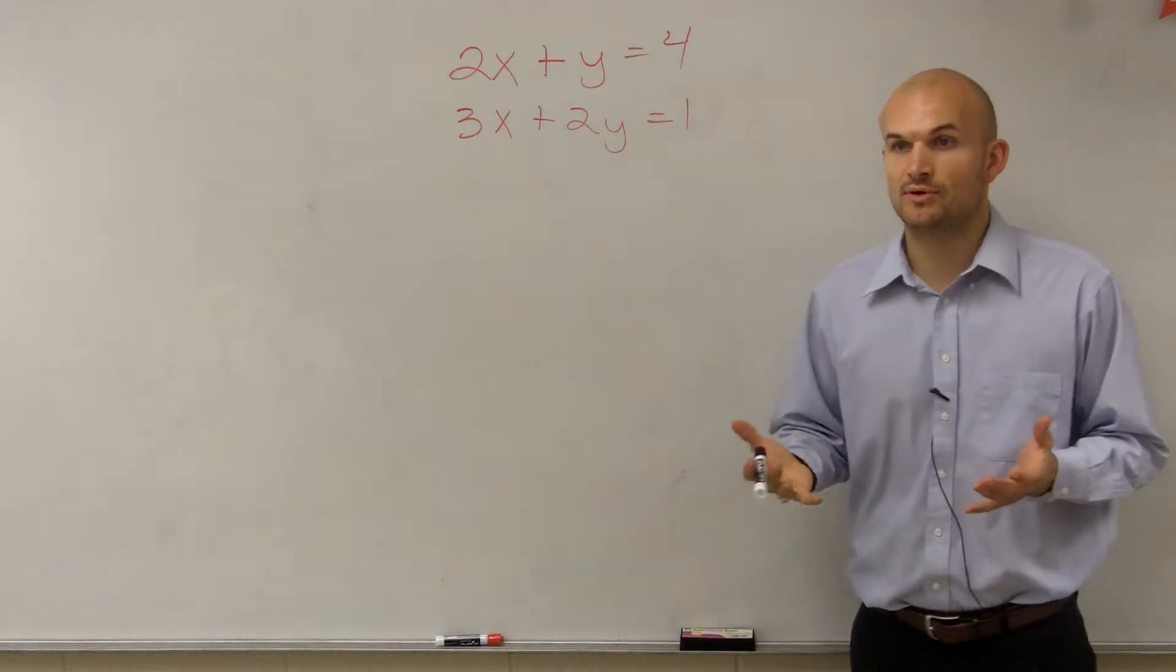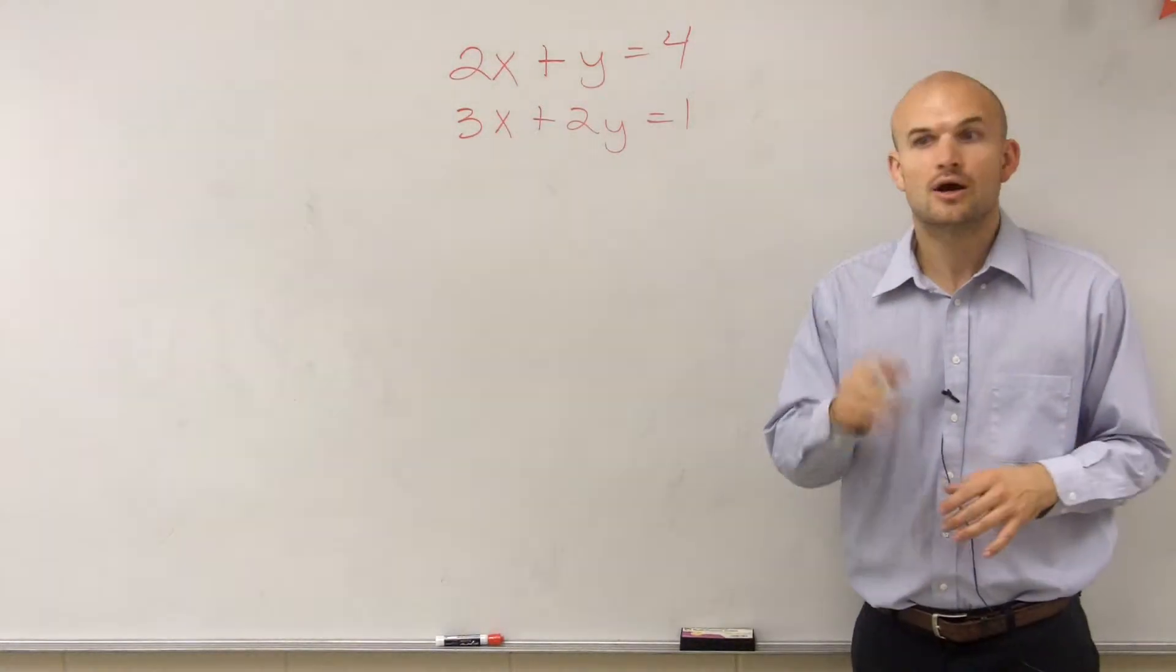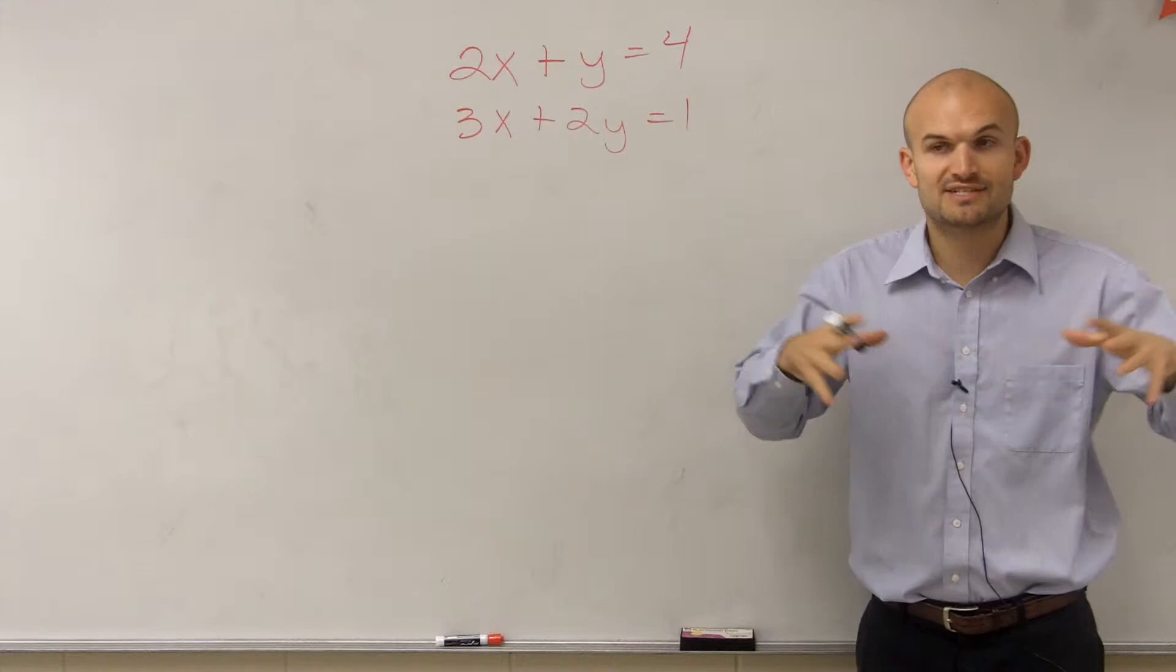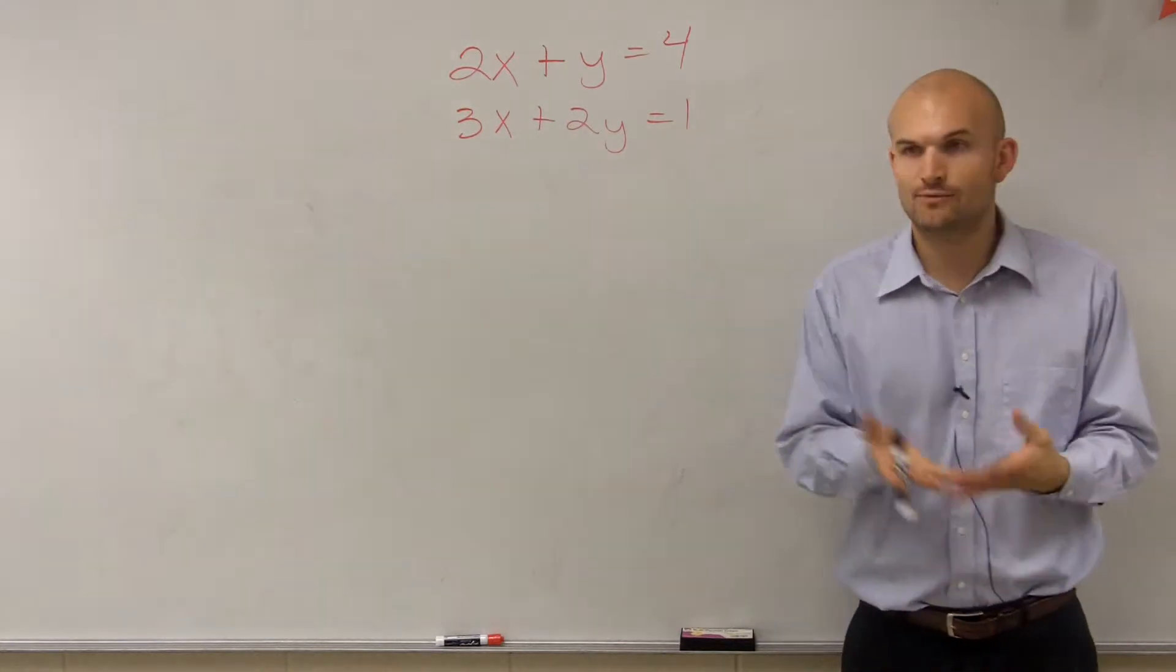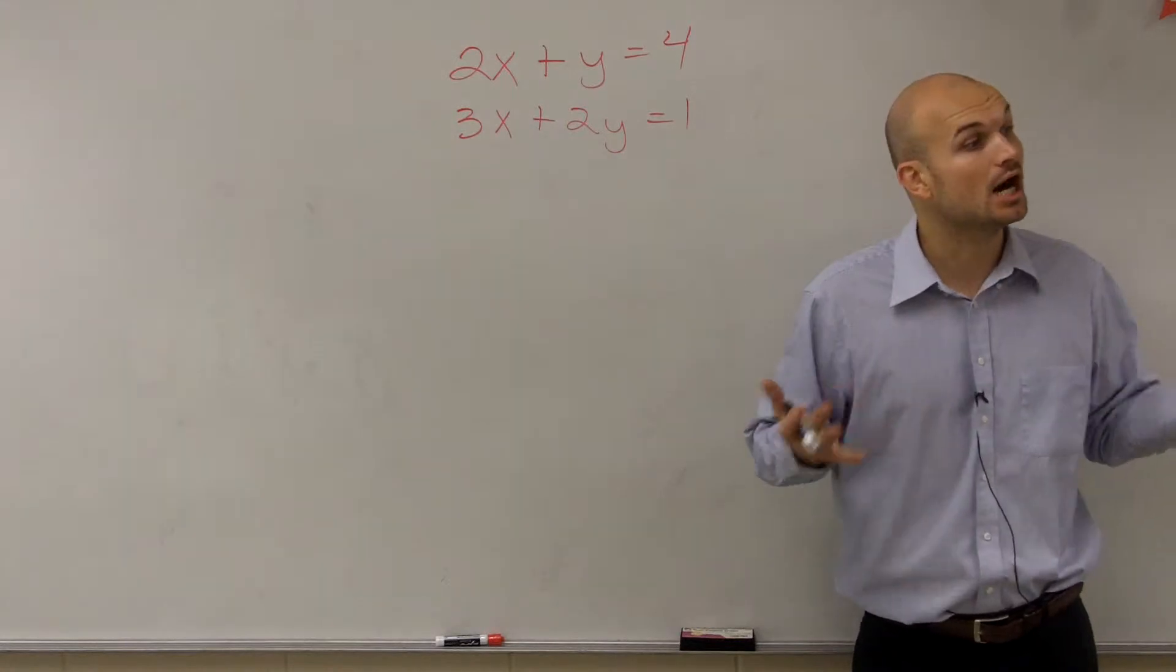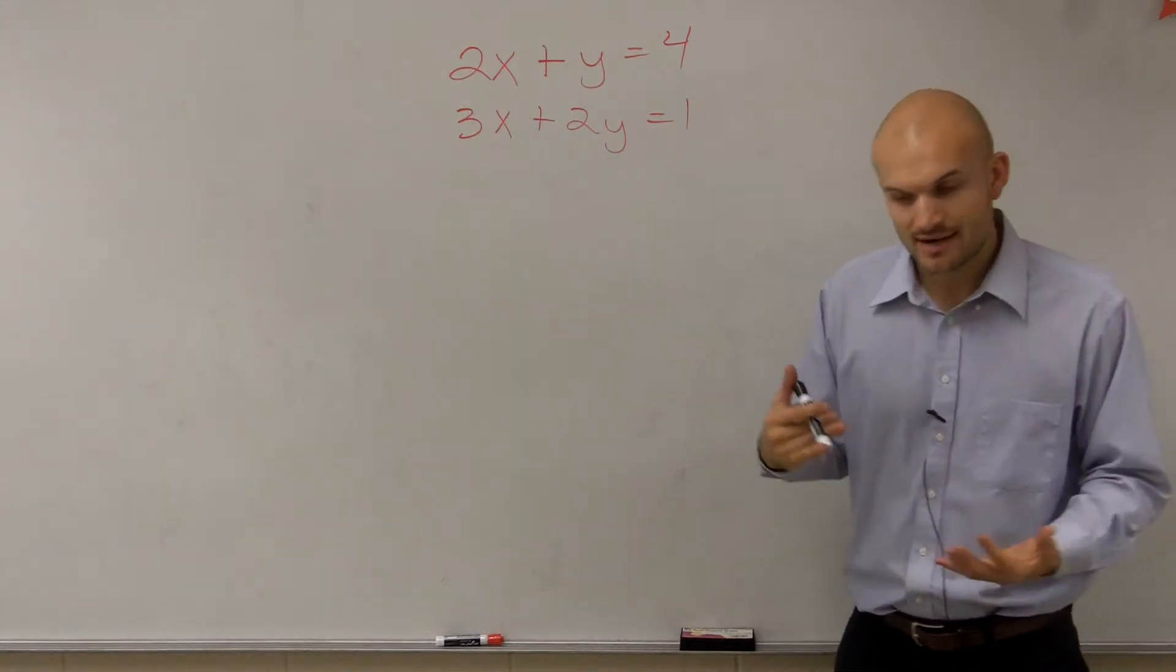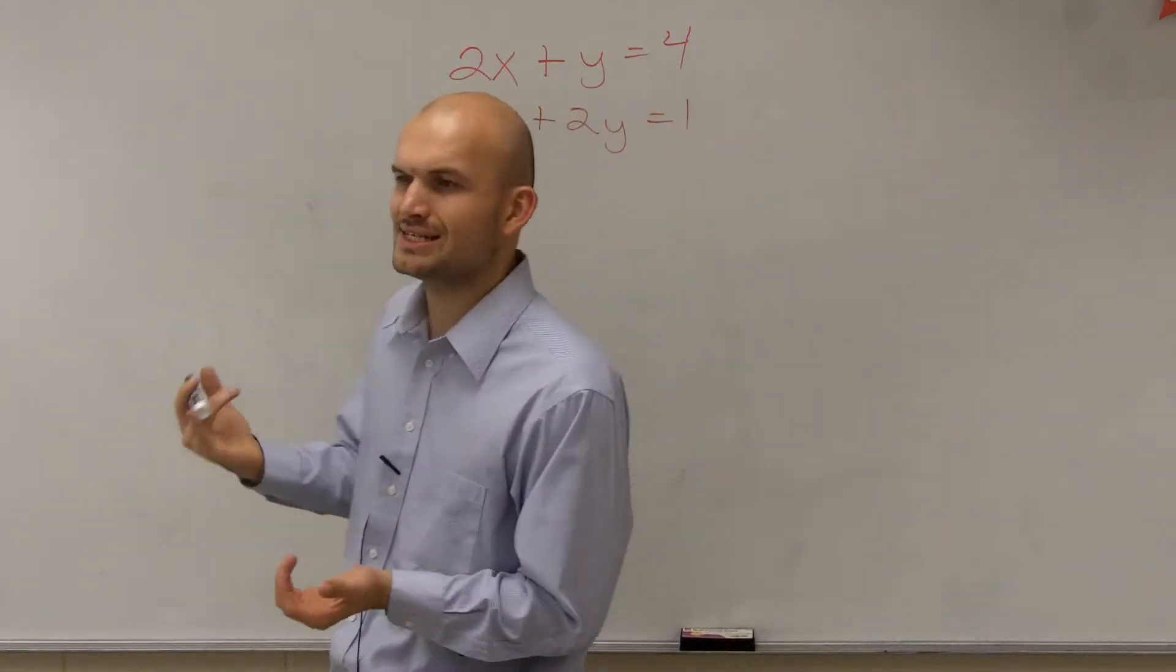I need to look at my variables. First thing I want to do is determine what is the easiest variable to solve for, meaning what is the easiest variable for me to isolate, to get by itself. When you're thinking about that, how do I know what is the easiest?